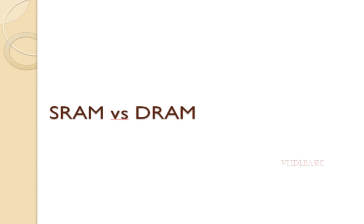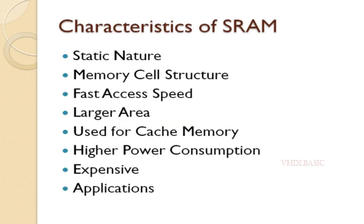Hi, hello, welcome to VHDL Basics. Today we are going to discuss the difference between SRAM and DRAM. If you haven't subscribed to this channel yet, please subscribe. First of all, we need to know what is SRAM. SRAM stands for Static Random Access Memory. It's a type of volatile memory used in digital design and integrated circuits.